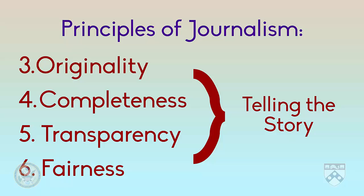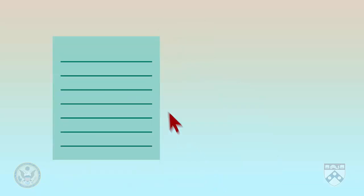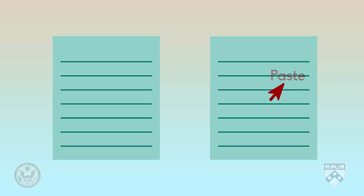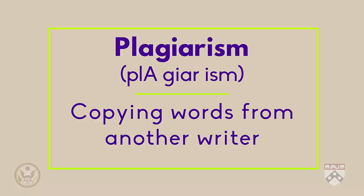The first important principle to remember when writing a story is originality. This means creating something new, so a journalist must not borrow the words of others and pretend that they have created them. Imagine a hospital is being built in your town. Obviously, the facts of the story are the same, but the way a journalist writes about the story must be original and not copied from someone else. If a journalist copies a story about the hospital from someone else and then puts their name on it, we call it plagiarism.